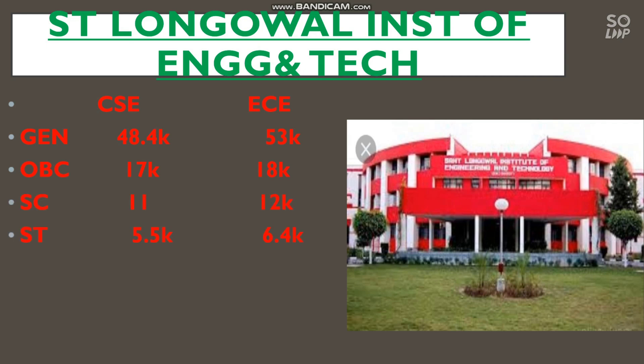Continuing with Cent Longwall: CS 48,400 and EC 53,000 for General; OBC: 17,000 and 18,000; SC: 11,000 and 12,000; ST: 5,400 and 6,400; EWS: 8,400 and 8,800. If you want to check your category rank based on your percentile, watch my video 'Percentile vs Category Rank' — link is in the description and the I-button — to estimate which GFTI or NIT you can get.